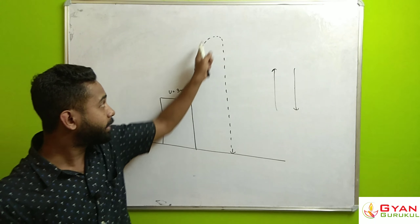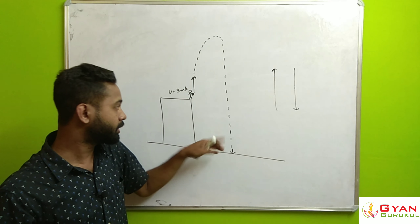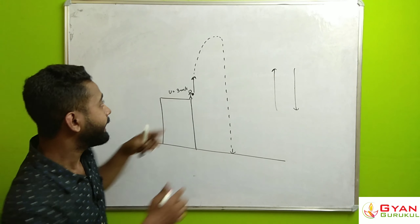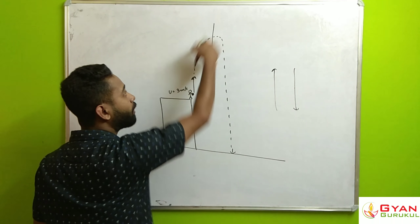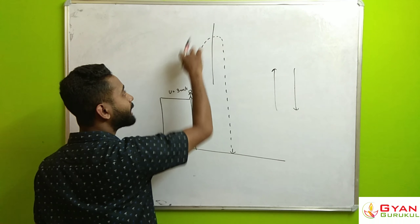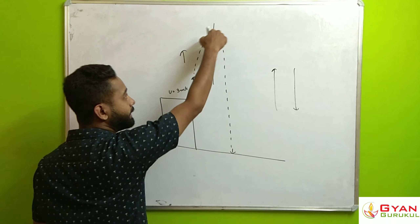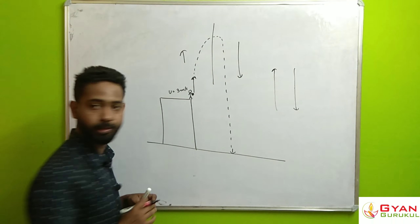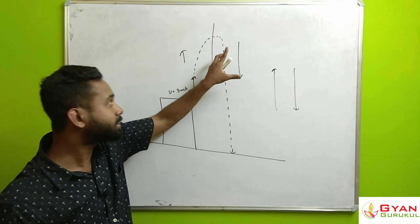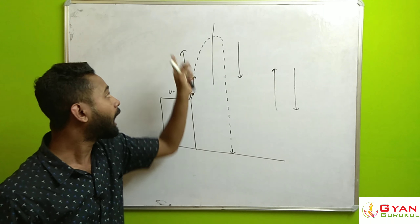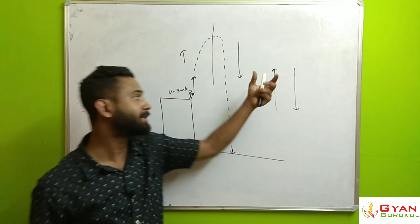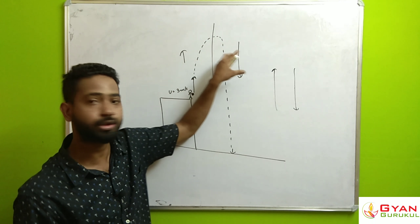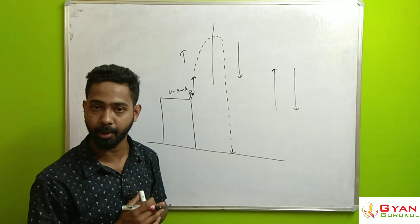In this particular motion, we can differentiate the motion into two different parts. One part is the upward motion, and the other part is when the ball is falling down — that is the downward part of the motion. We will use the equations of motion for both the upward and downward parts accordingly.